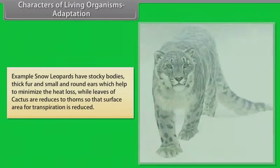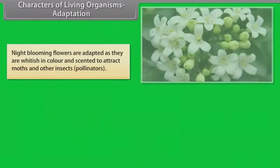Snow leopards have stocky bodies, thick fur, and small round ears which help to minimize the heat loss. While leaves of cactus are reduced to thorns so that surface area of transpiration is reduced.